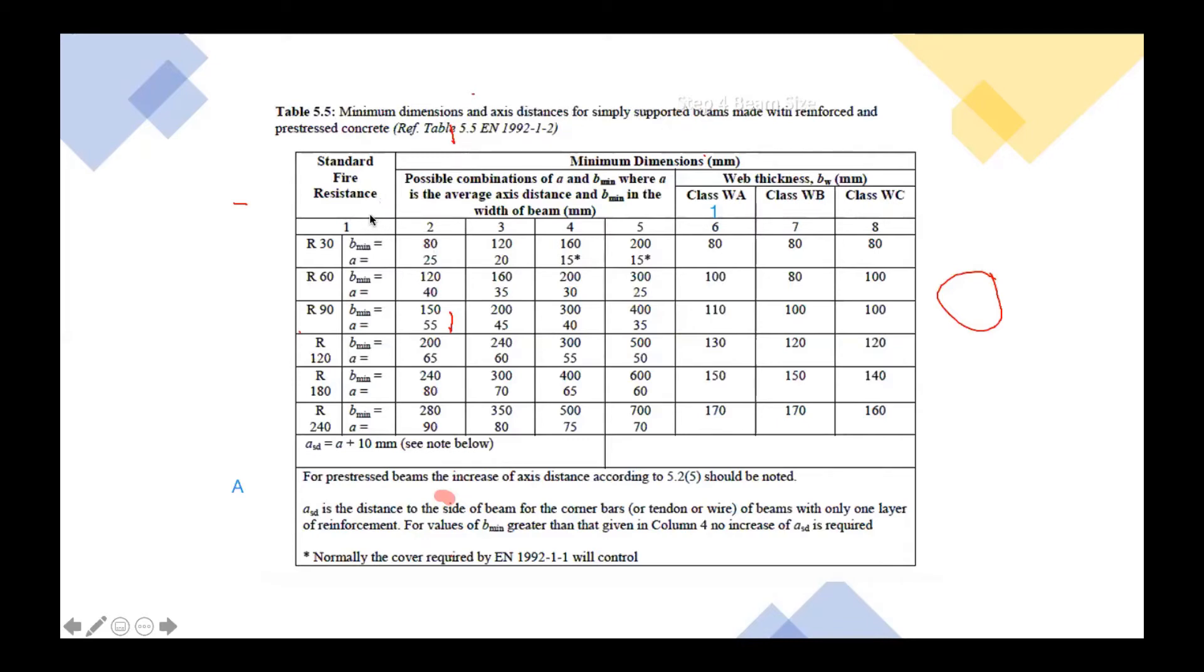So, from this table, all we need to assume is that before we design, we will fix the fire resistance. For example, here, if you want to fix it as R60, resistance 60 minutes, B minimum should be, we have four options here. Option one, denote as two, three, four, five. This is the option of the beam.